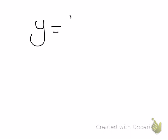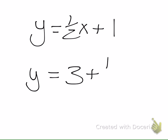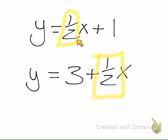For example, are these two lines parallel? Yes — they have the same slope. The number in front of x is always the slope. These two lines would never cross. One goes through positive one on the y-axis and goes up one over two; the other goes through positive three on the y-axis and also goes up one over two. These two lines are parallel.